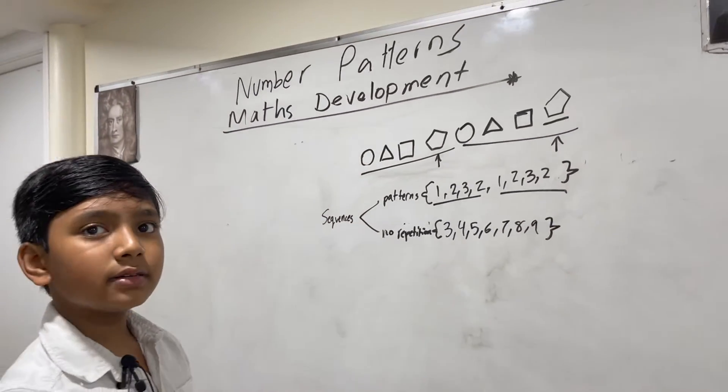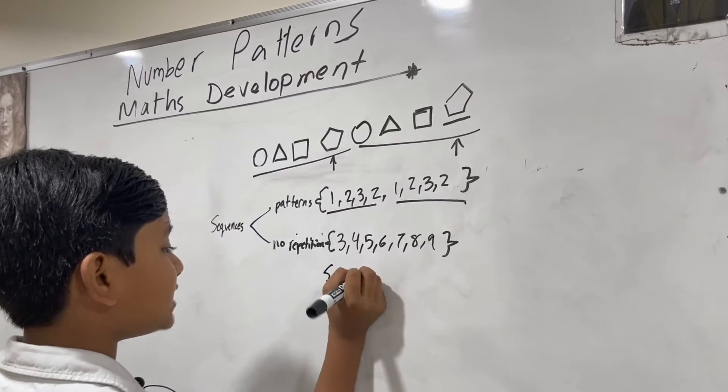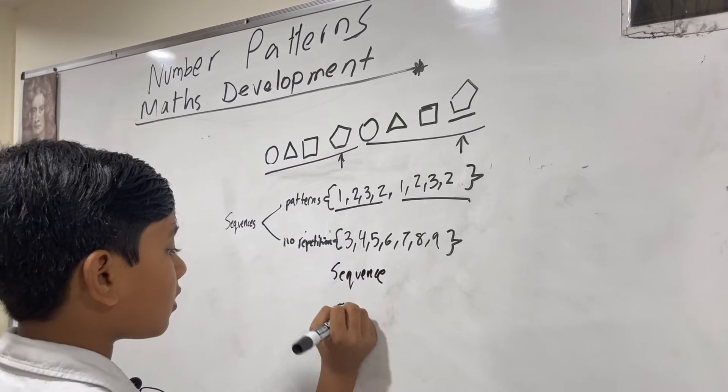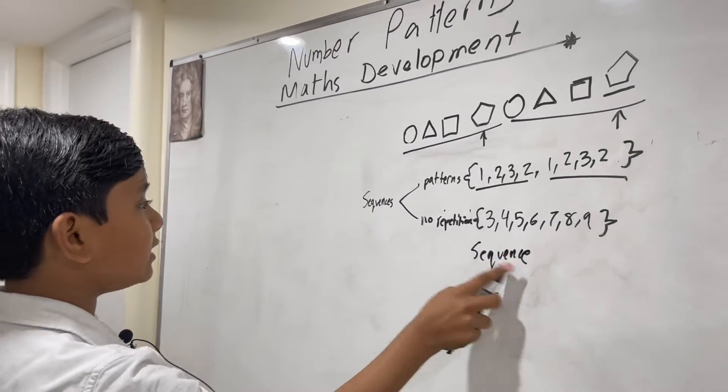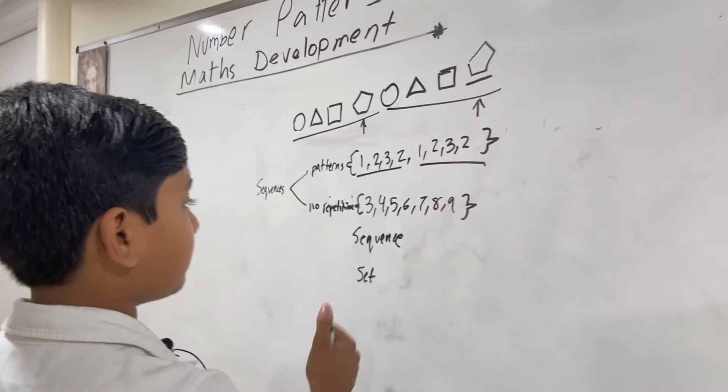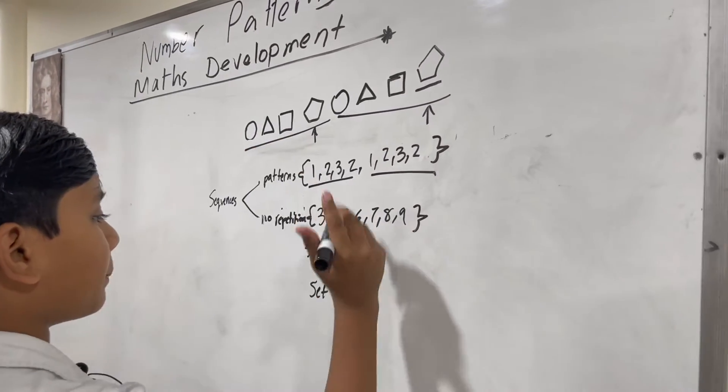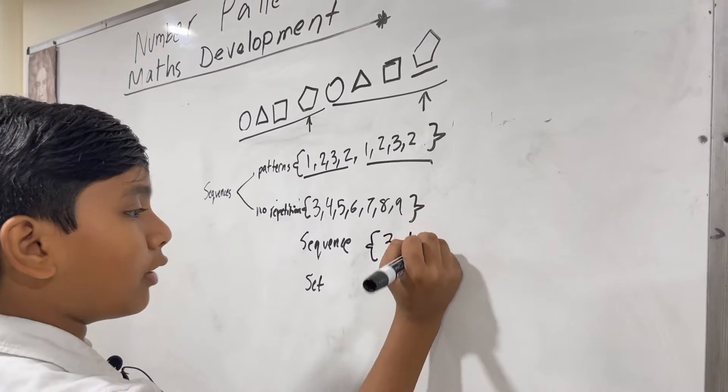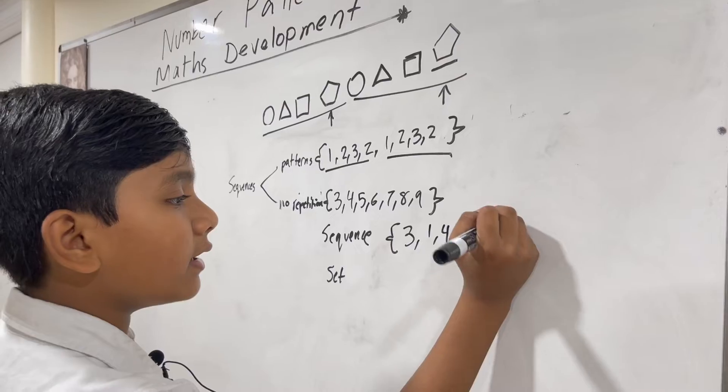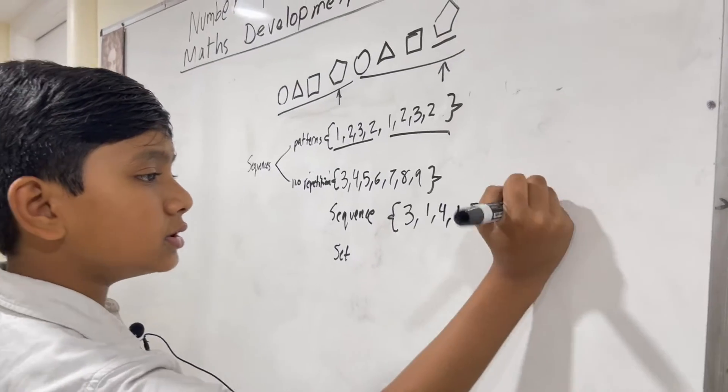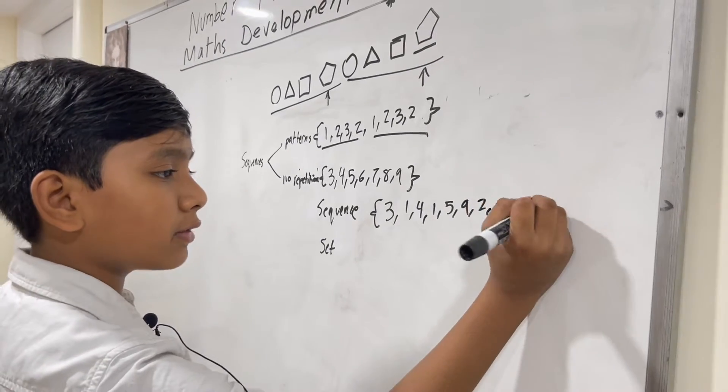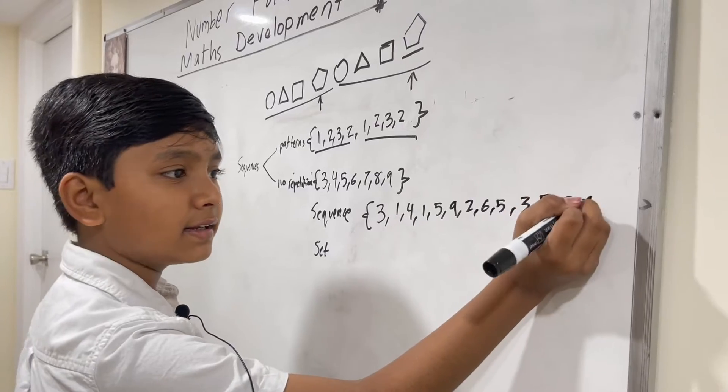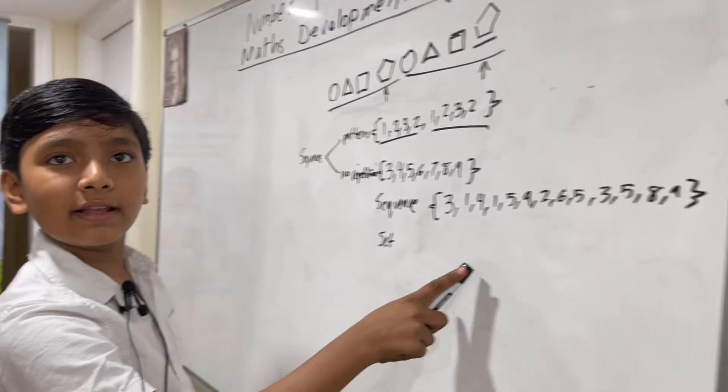Now, there's a difference between a sequence and a set. So the sequence, for example, let's say we have a no repetition sequence. We could have 3, 1, 4, 1, 5, 9, 2, 6, 5, 3, 5, 8, 9. And if you can't tell, these are the digits of pi.